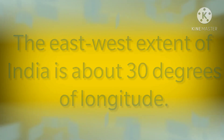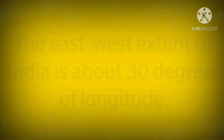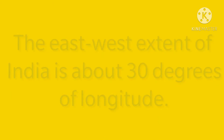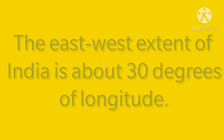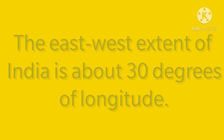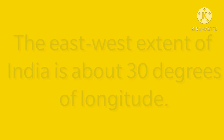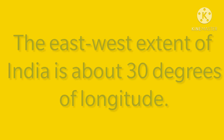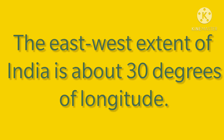The east-west extent of India is about 30 degrees of longitude. Due to this great longitudinal extent, the sun rises or sets almost two hours earlier in the easternmost part than in the westernmost part.